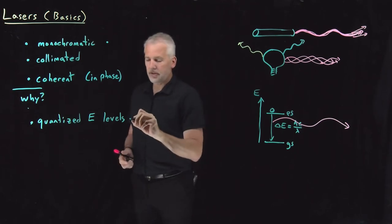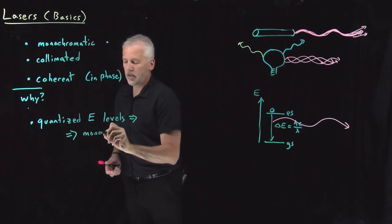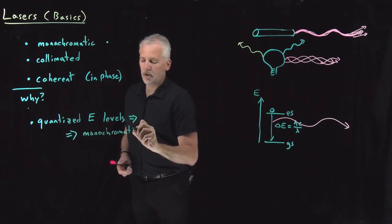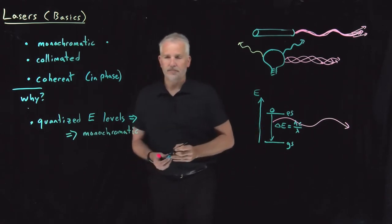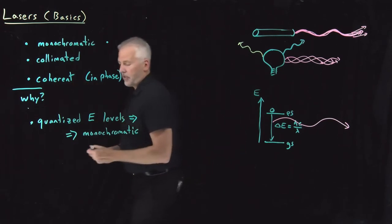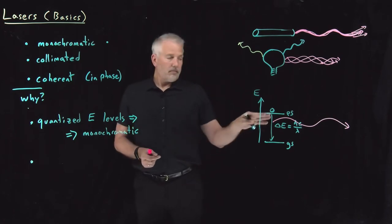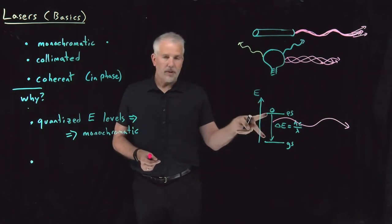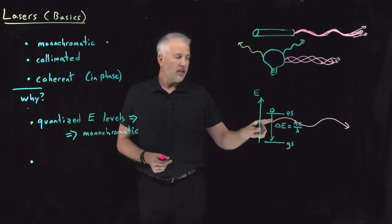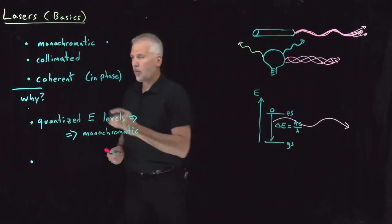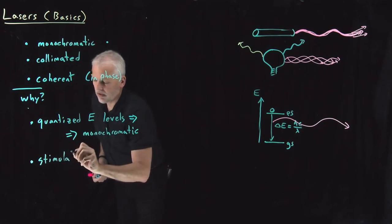The fact that those energy levels are quantized — meaning only specific energies are allowed with nothing in between — means that transition always has the same energy and always gives off a photon of the same wavelength. That's a relatively easy way to make a monochromatic light source: have only one type of transition generating light. So quantized energy levels give rise to the monochromaticity of the beam. Now let's tackle the coherence.